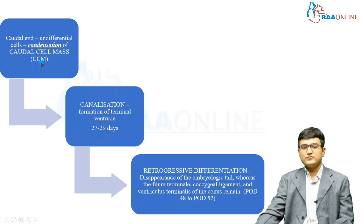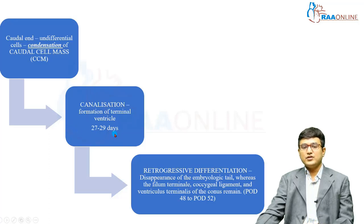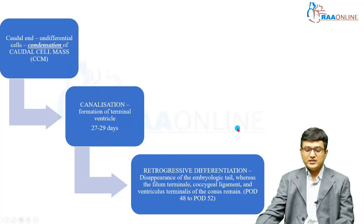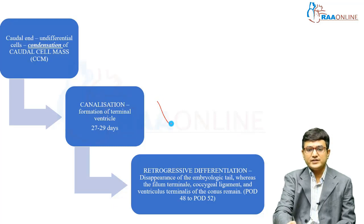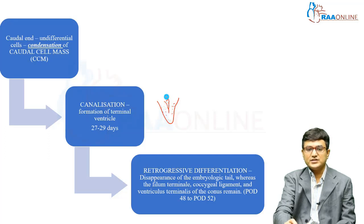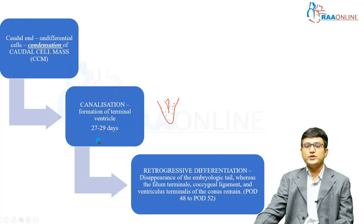Once the caudal cell mass has formed, the second step of secondary neurulation occurs, called canalization. The caudal cell mass canalizes and a terminal ventricle forms. This canalization usually happens between 27 to 29 days post ovulation.